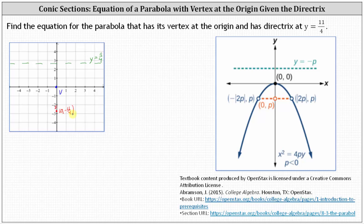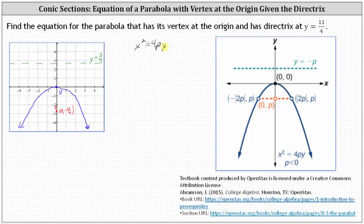Because the focus is always inside the parabola, we know the parabola opens down and looks something like this. Whenever the directrix is parallel to the x-axis and the parabola opens along the y-axis with the vertex at the origin, the equation will always be in the form of x squared equals 4py. Because the parabola opens down and the focus is the point zero comma p, we now know p equals negative 11 fourths.